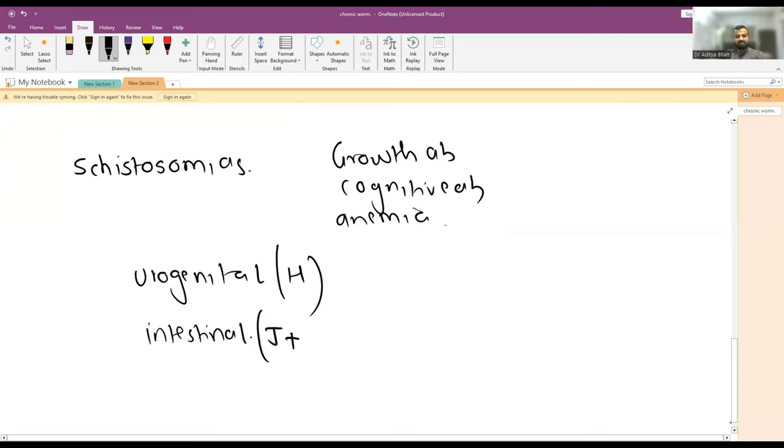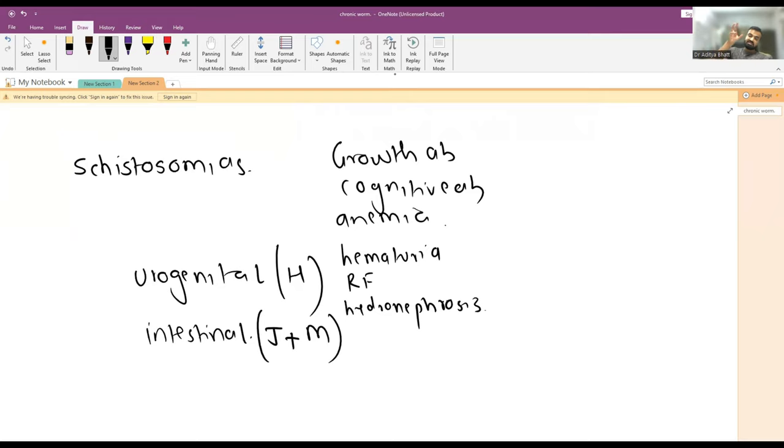Urogenital will cause hematuria, bladder cancer, hydronephrosis, renal failure, and infection of the bladder like bladder swelling. Intestinal schistosomiasis - these worms reside in the venous drainage of the small intestine. They reside in the veins, so they may lead to periportal fibrosis with intestinal bleeding.